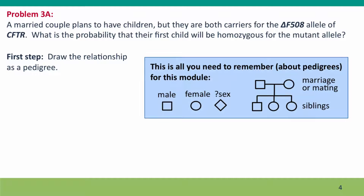The first step is to draw the relationship we're thinking about — a drawing to guide our thinking. The kind of drawing we're going to make is called a pedigree drawing. There's a standard set of symbols used to represent family relationships. We draw a square for a male and a circle for a female.